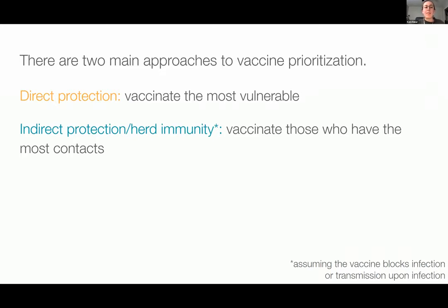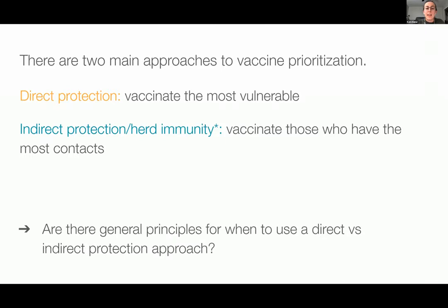This indirect approach is really like a herd immunity approach. A key assumption, if this is the strategy you're going to go with, is that the vaccine blocks at least some level of infection and/or transmission. Thinking about these two different ideas, it seems like they're going to point us in two different directions for who to prioritize. The motivation my group was really thinking about is: are there general principles for when to use a direct versus an indirect protection approach, and can we know this ahead of time without having to run a bunch of model results?